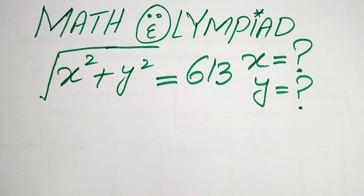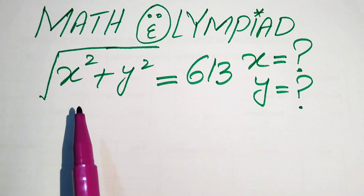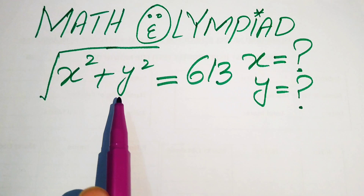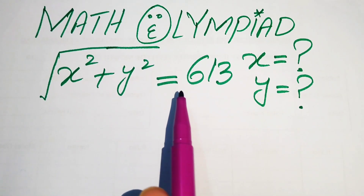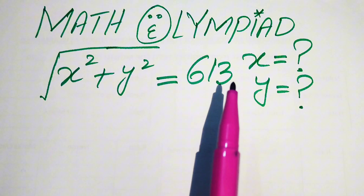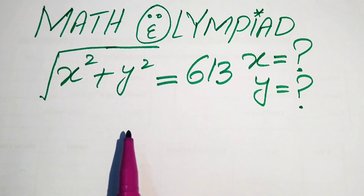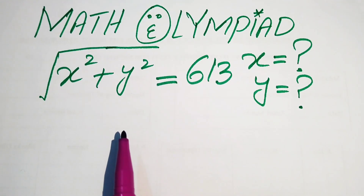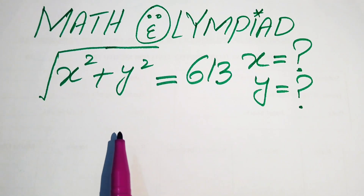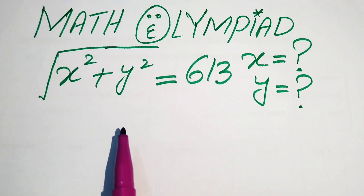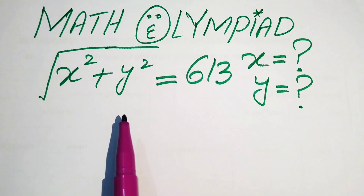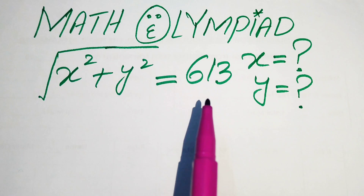Hello everyone, welcome. We solve this algebra problem where the square root of x² plus y² equals 613, and we find the values of x and y. In the solution we use the geometry concept and the Pythagorean theorem in order to solve this problem.